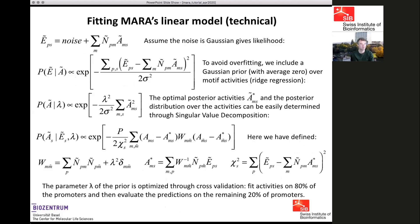Technically, we model the expression changes of each promoter across samples as a linear function of motif counts and motif activities. We assume the noise — the deviation between observed and predicted expression levels — is Gaussian distributed. The probability of all the expression data given the motif activities is given by a Gaussian form. To avoid overfitting, we put a Gaussian prior on the motif activities, controlled by one parameter lambda, which suppresses fluctuations in motif activities.